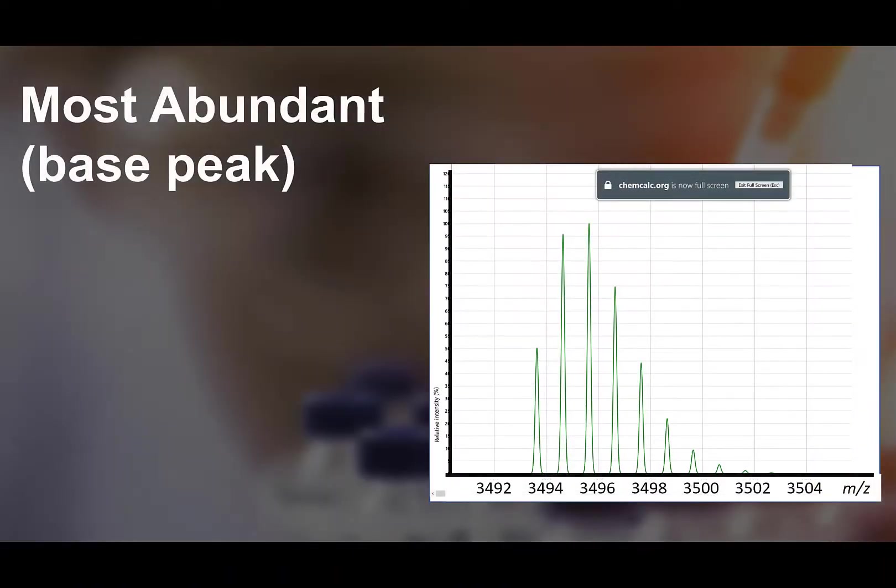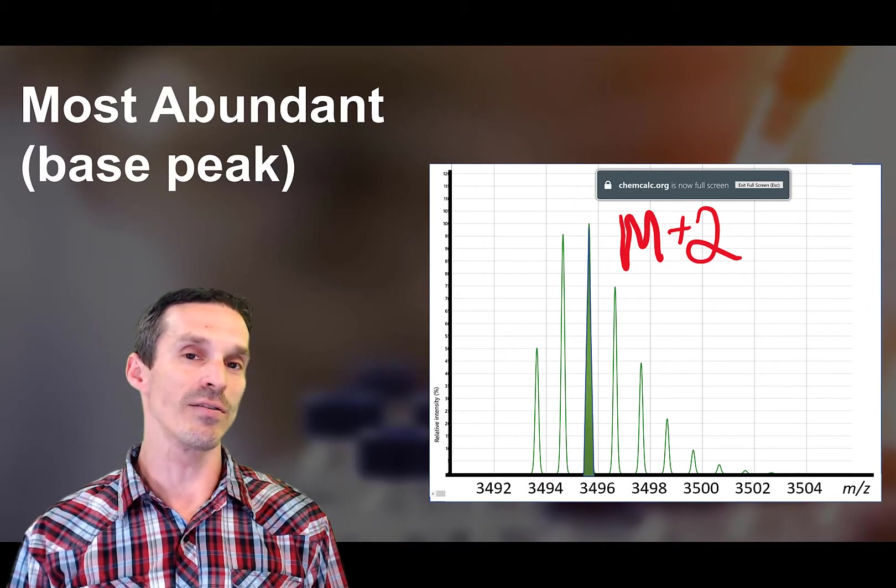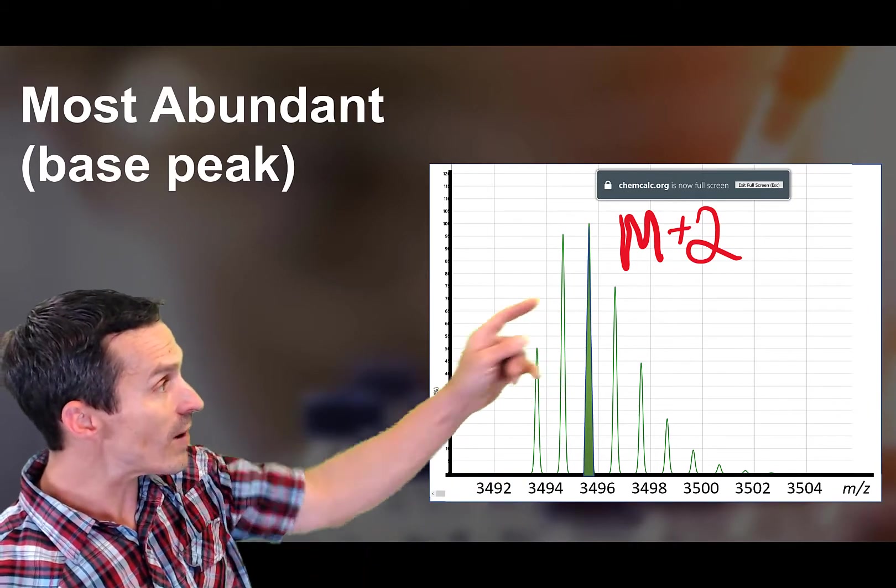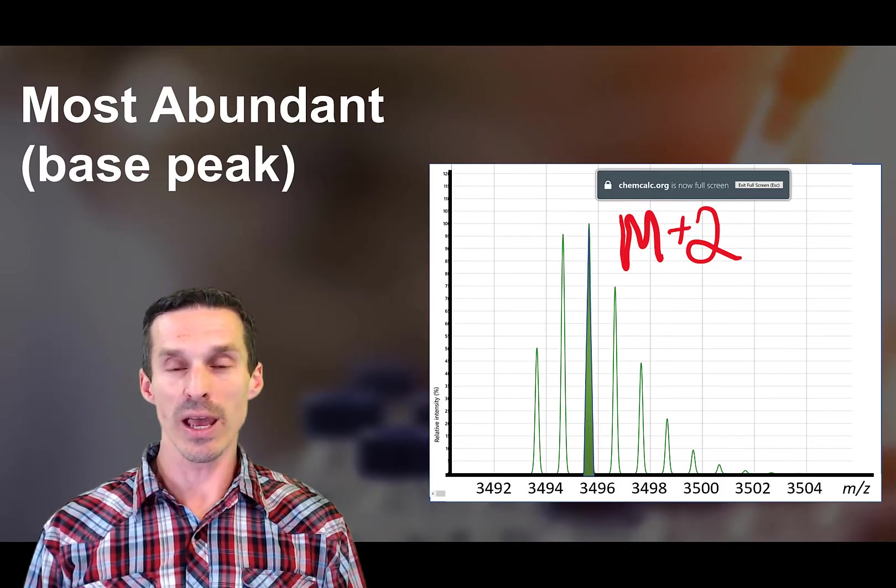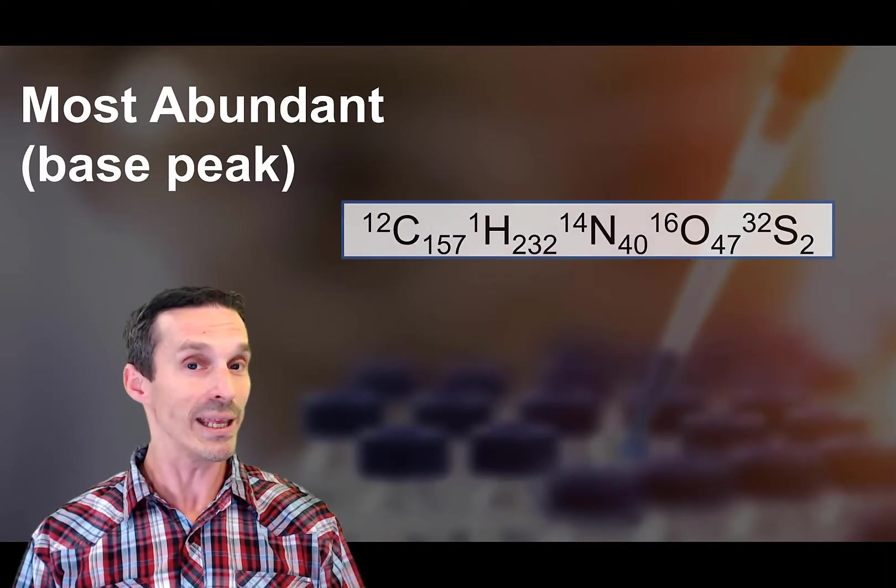All right, let's go back to our mass spectrum of insulin chain B and we're asking the question now: what about the mass of that peak? So rather than looking at the monoisotopic peak, we're trying to find one of these isotopes, the M+2 isotope. Well I guess you first have to figure out what is that isotope from.